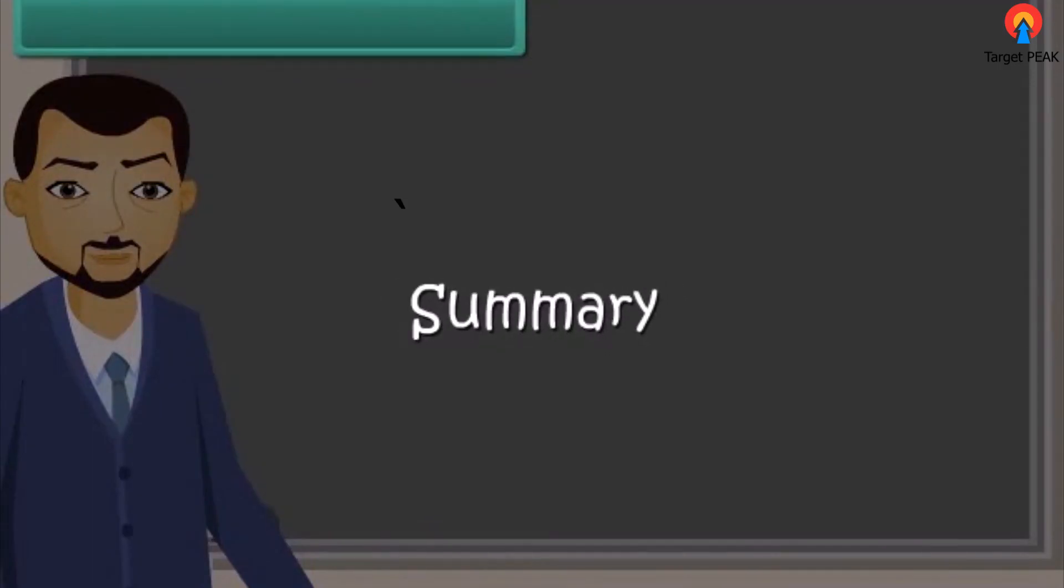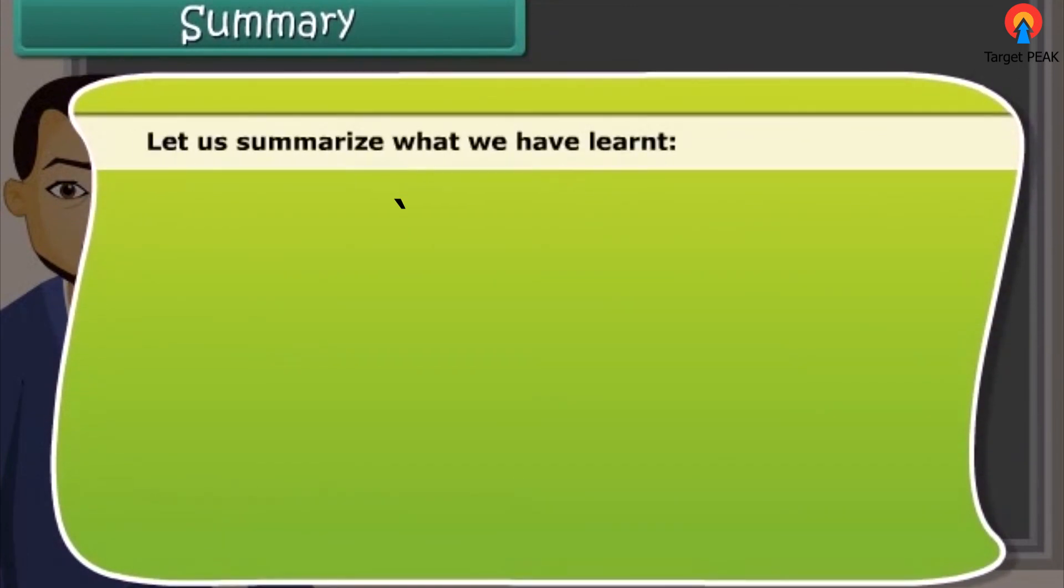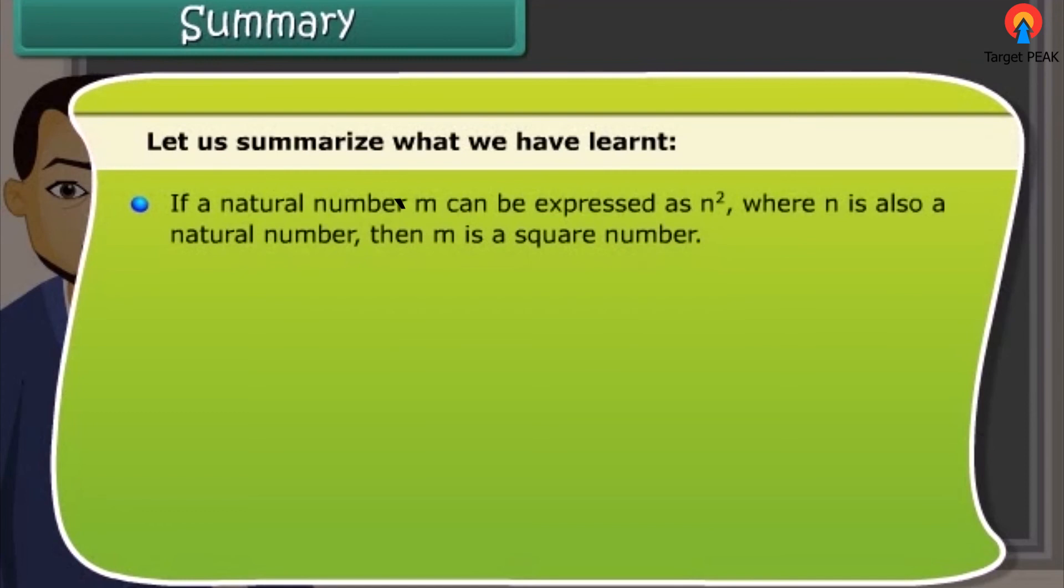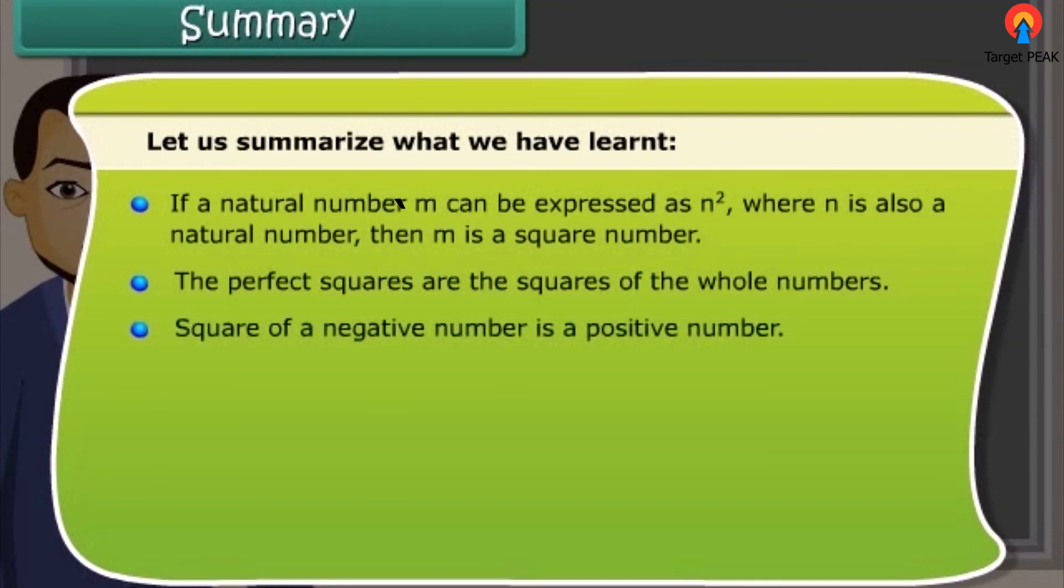Summary. Let us summarize what we have learned. If a natural number M can be expressed as N square where N is also a natural number, then M is a square number. The perfect squares are the squares of the whole numbers. Square of a negative number is a positive number. Square root is an inverse operation of squaring.